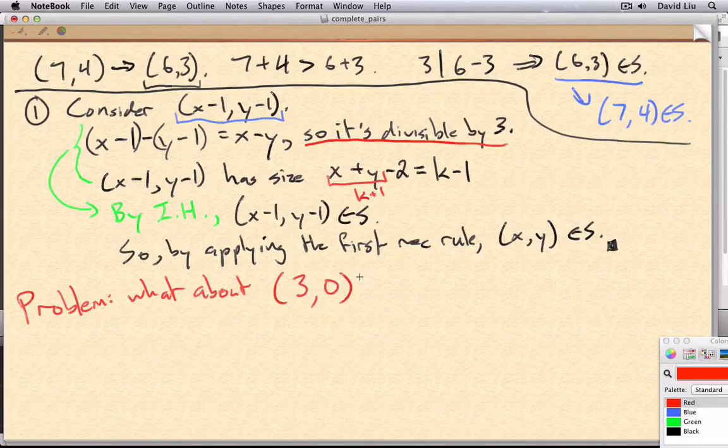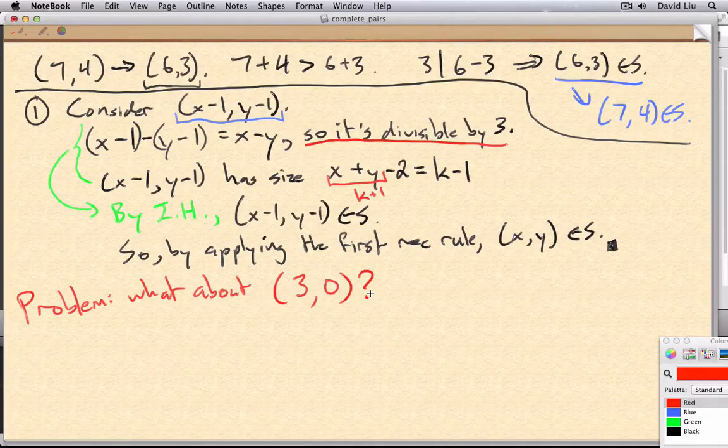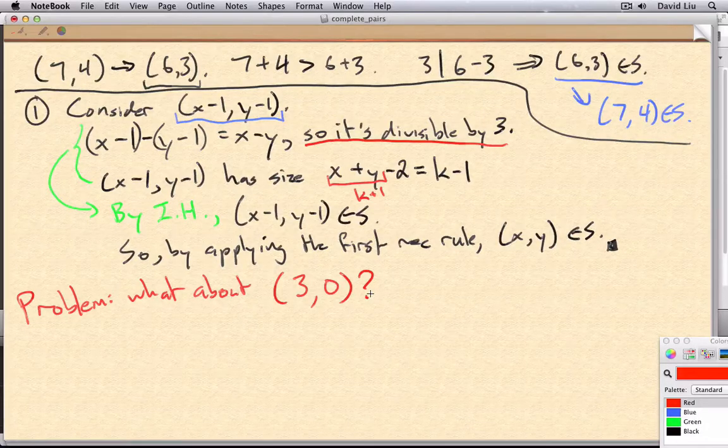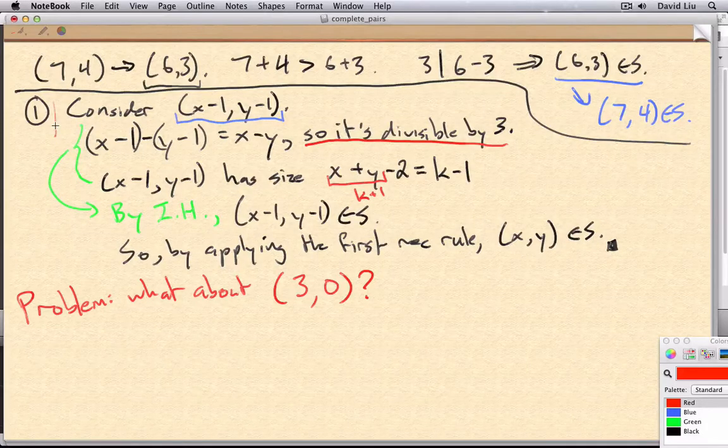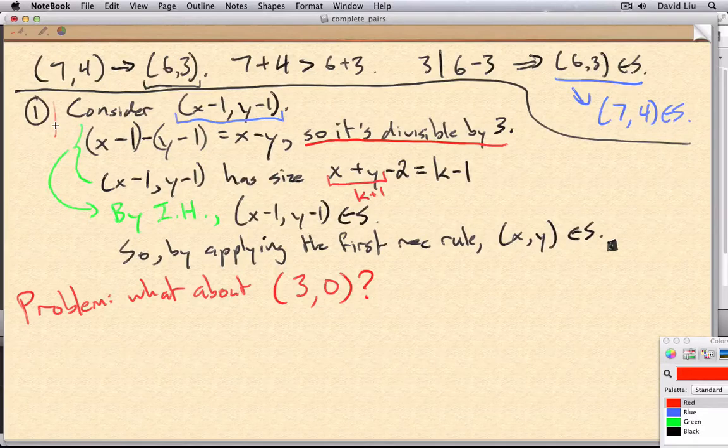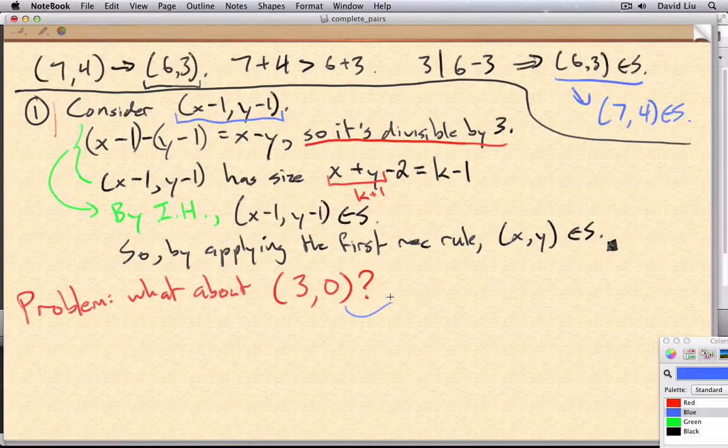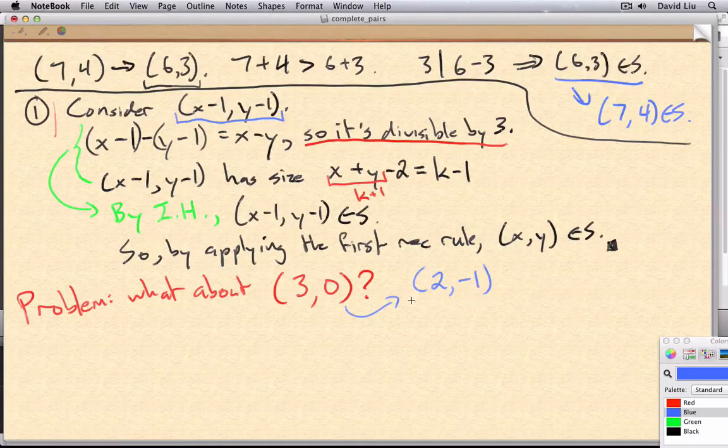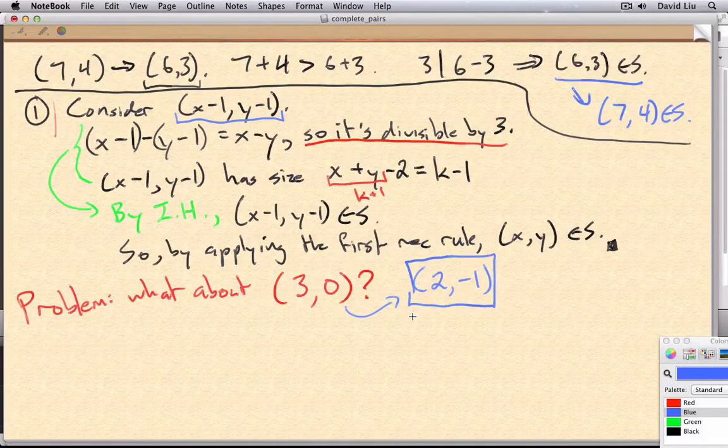So for example, what about (3, 0)? 3 minus 0 is certainly divisible by 3, and this should be an element of S. But this argument that we gave up here, that doesn't work for 3, 0. Because if you subtract 1, you'll get (2, negative 1). And our induction hypothesis says absolutely nothing about 2, negative 1.